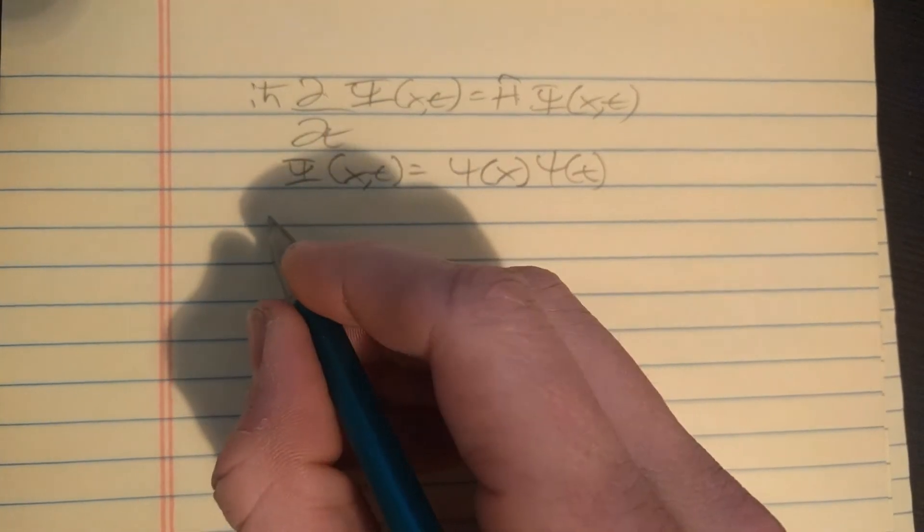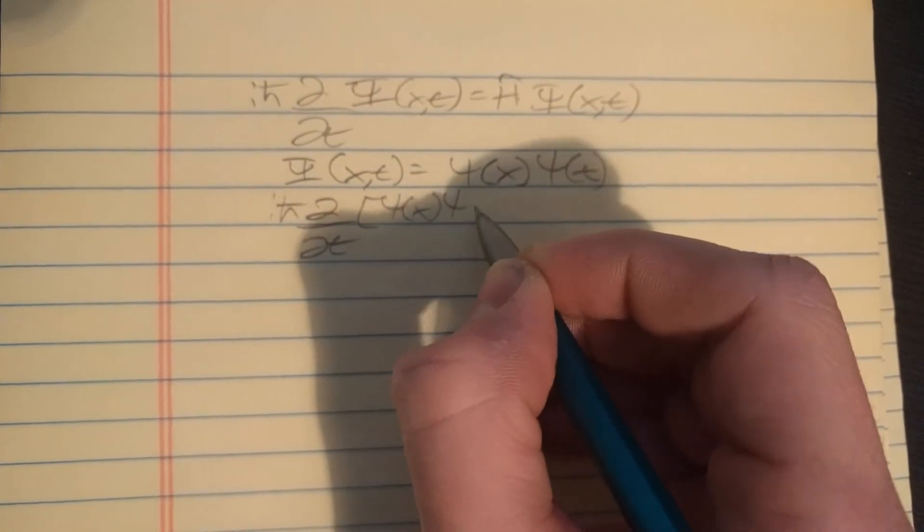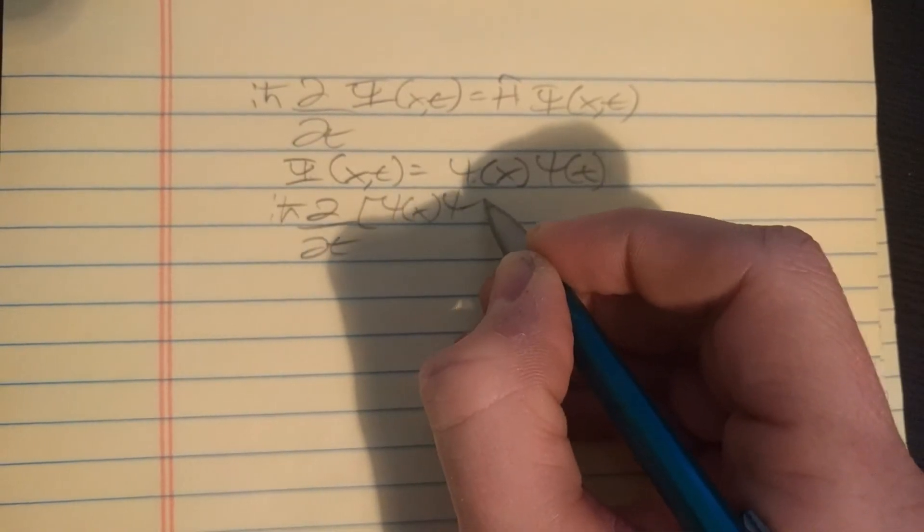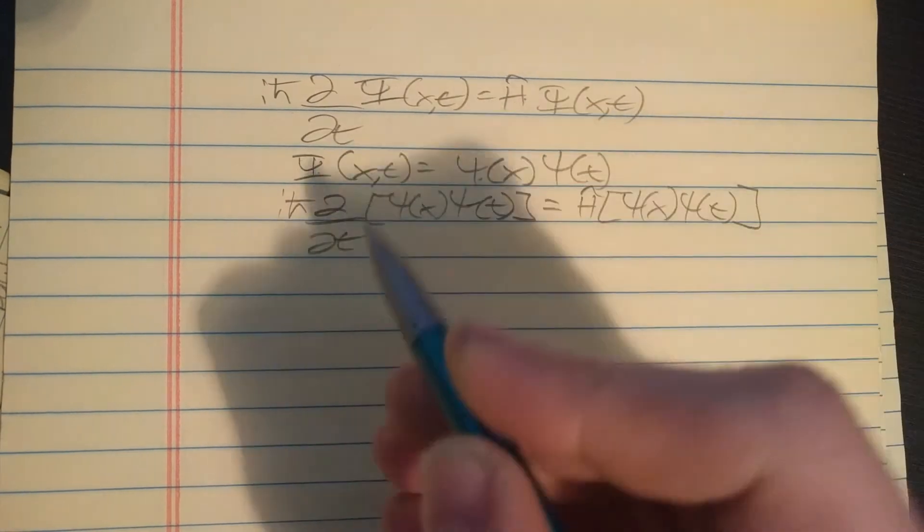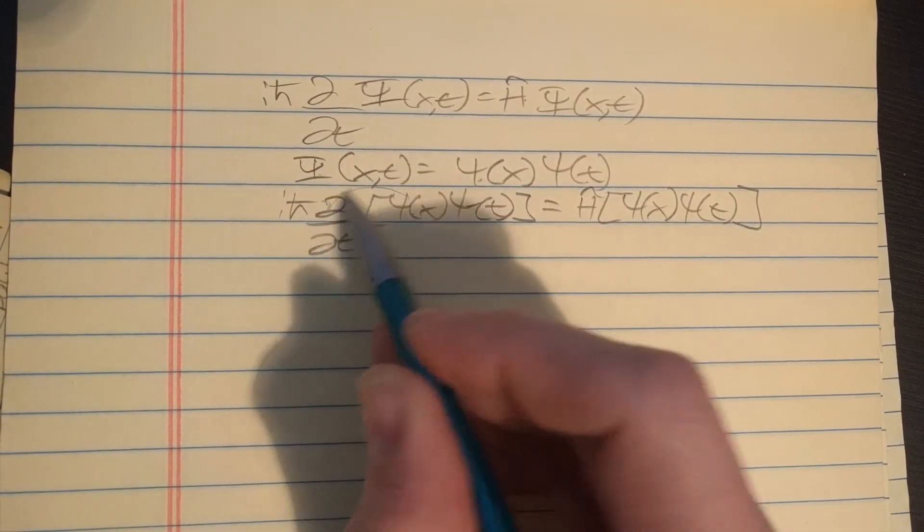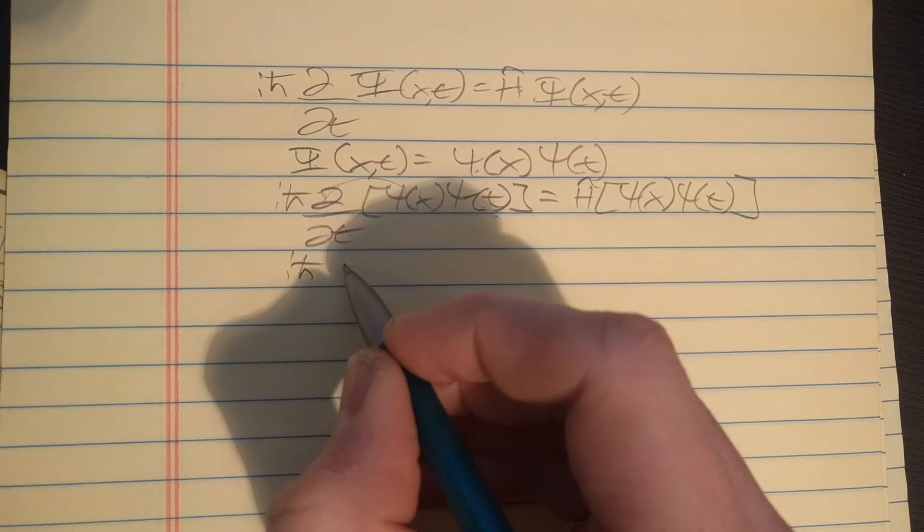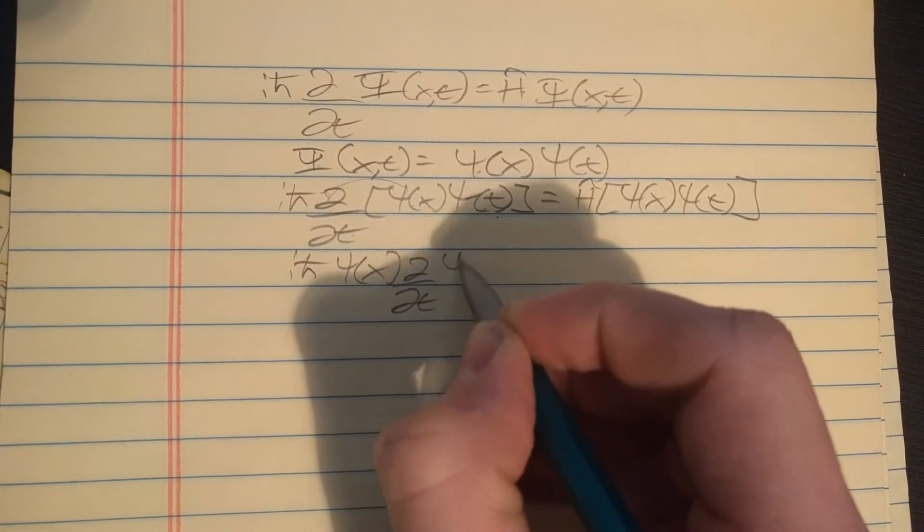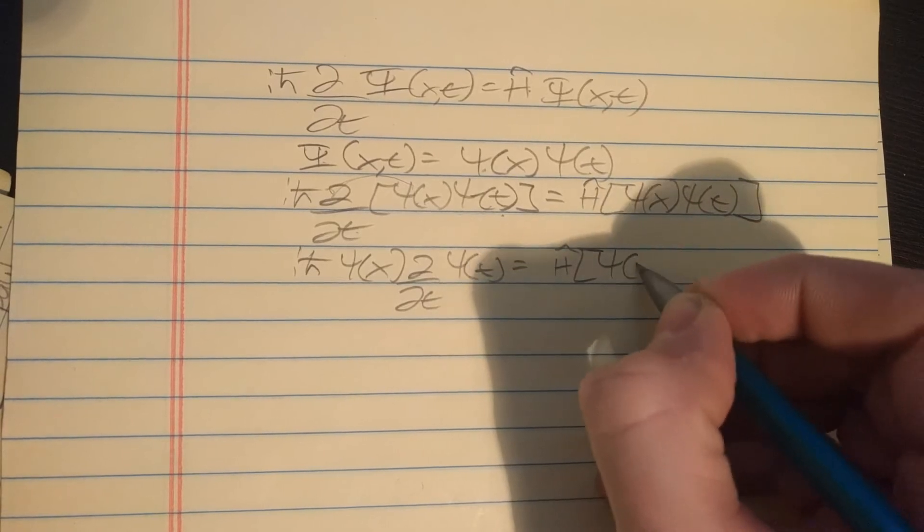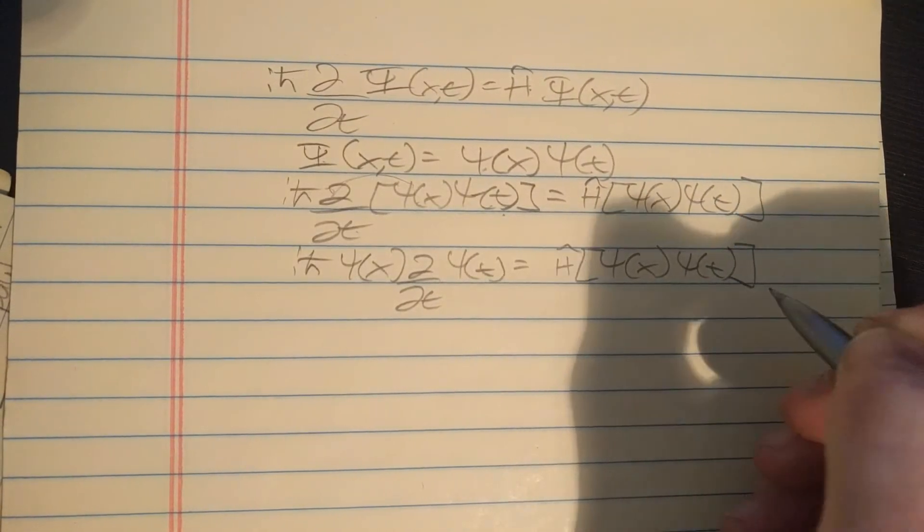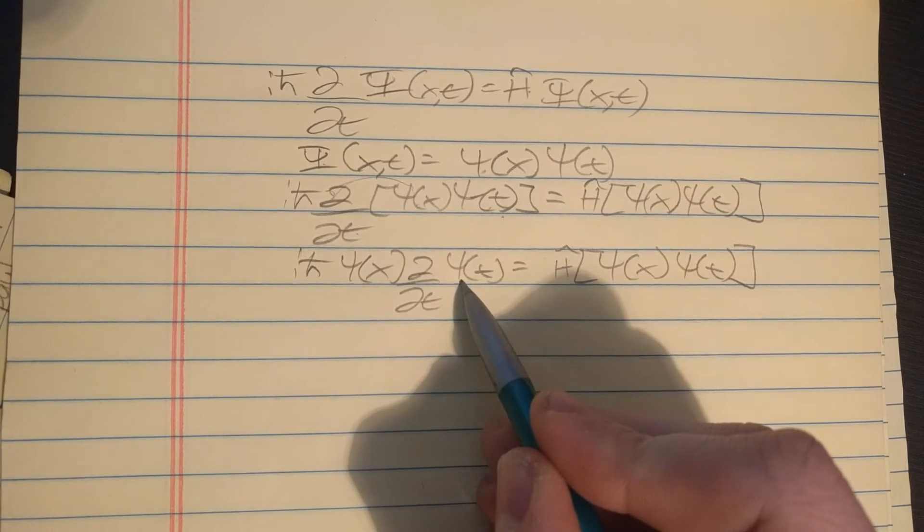We can do this and if we plug that in we got ih bar d/dt psi of x times psi of t equals the Hamiltonian times psi of x times psi of t. We can bring psi of x out because it doesn't depend on t, so on this side we got psi of x d/dt psi of t equals the Hamiltonian times psi of x psi of t.